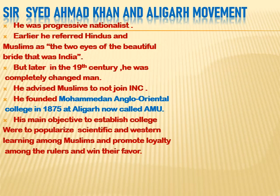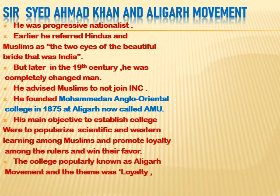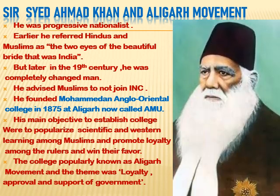He also promoted loyalty towards the rulers and winning their favor. He believed that if Muslims wanted their interests fulfilled in politics or the legislative assembly, they should be loyal towards the Britishers and win their favor — only then could they survive as a minority community. Since Muslims were a minority and the Hindu population was larger, the Britishers would look after their interests if they showed loyalty. The college soon became known as the Aligarh Movement, where all communal political discussions took place and the demand for a separate Muslim organization originated. The theme of the Aligarh Movement was loyalty, approval, and support of the British government.